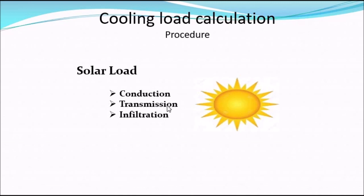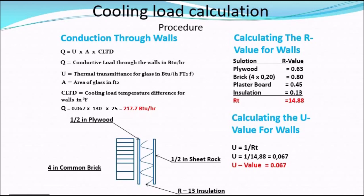In this example, due to a small amount of infiltration, we are only going to calculate the conduction and transmission load through the wall and glass. To calculate the conduction load through the walls, we use the equation Q = U × A × CLTD, where Q is the conductive load through the walls, U is the thermal transmittance, A is the area in square feet, and CLTD is the cooling load temperature difference for walls.